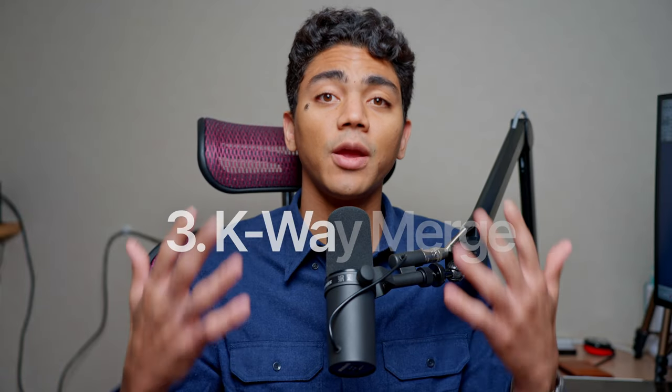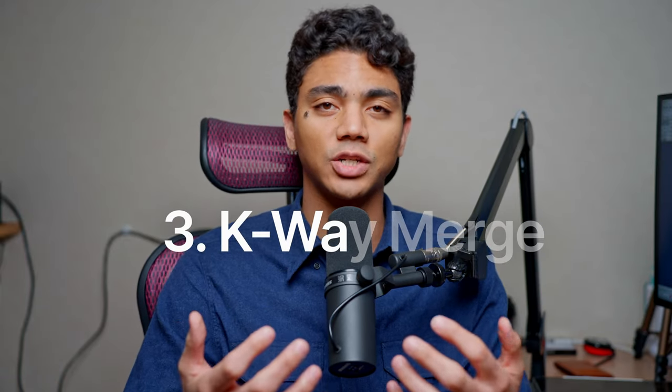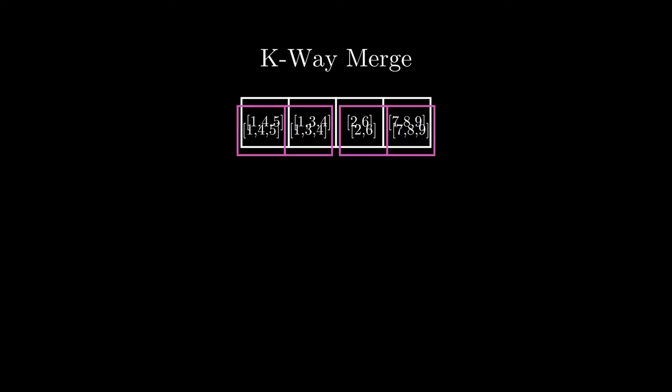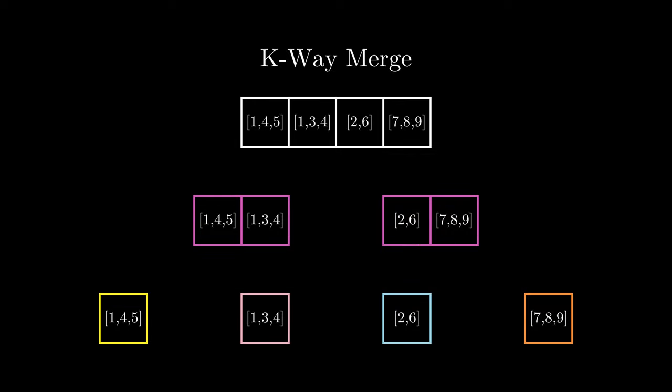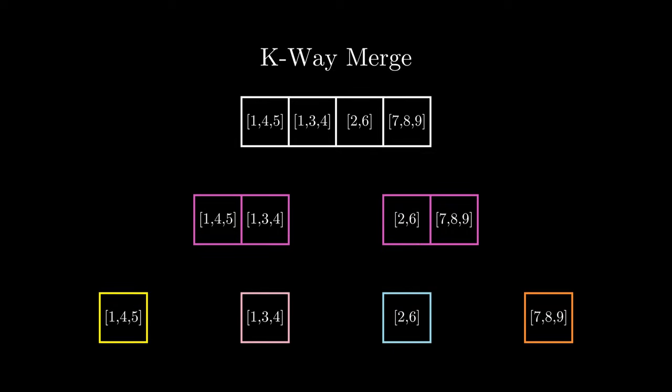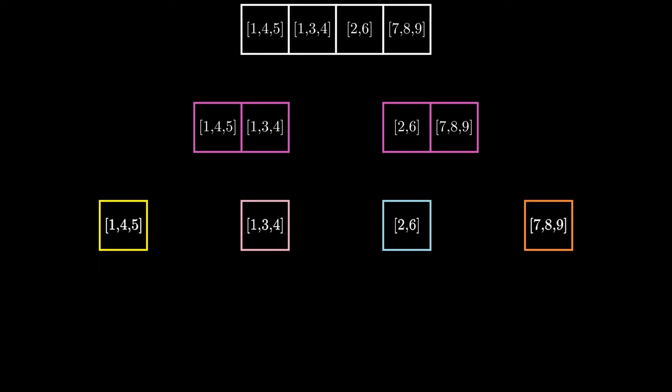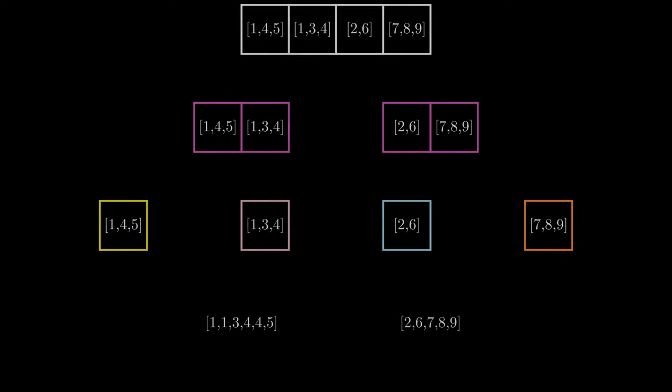The next algorithm is k-way merge, which makes use of both divide and conquer as well as two pointers. We're building on top of what we've already learned, and you should start to recognize the patterns. To understand k-way merge, we first need to understand how to merge two sorted arrays, which is also known as a two-way merge.